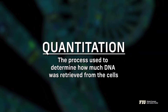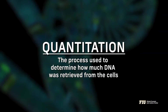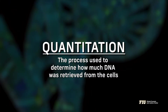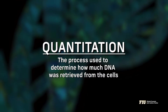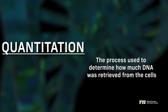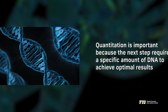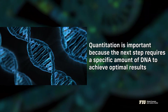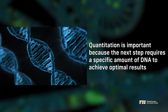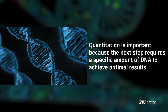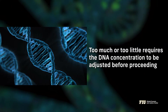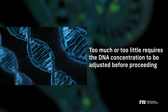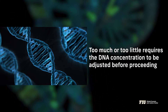The following step of analysis is to determine how much DNA was retrieved from the cells through a process called quantitation. Quantitation is important because the next step requires a specific amount of DNA to achieve optimal results. Too much or too little requires the DNA concentration to be adjusted before proceeding.